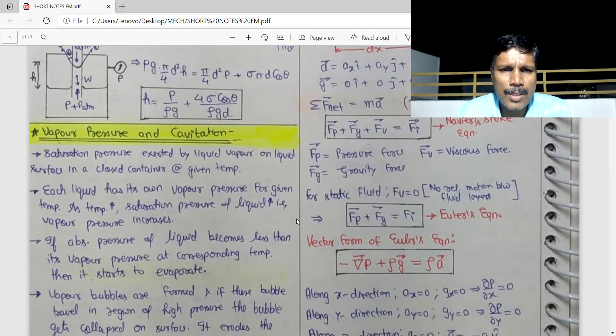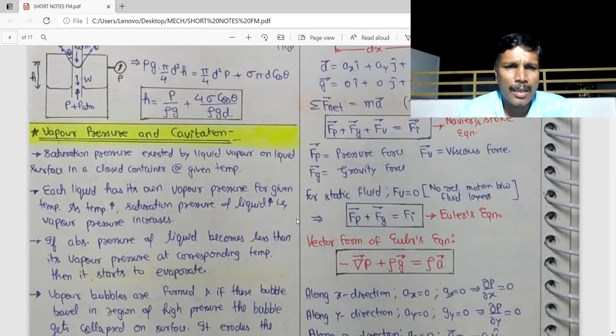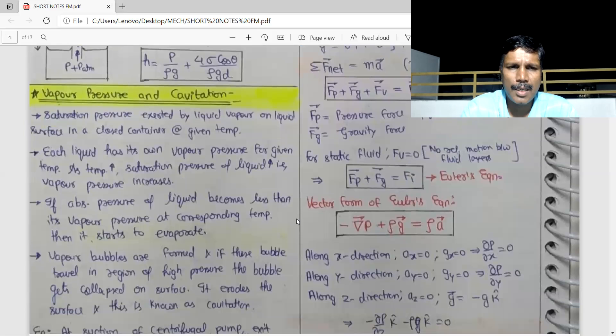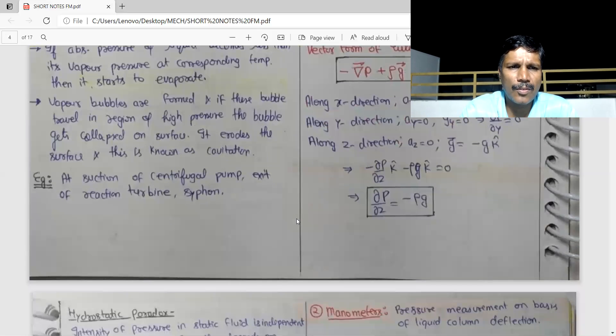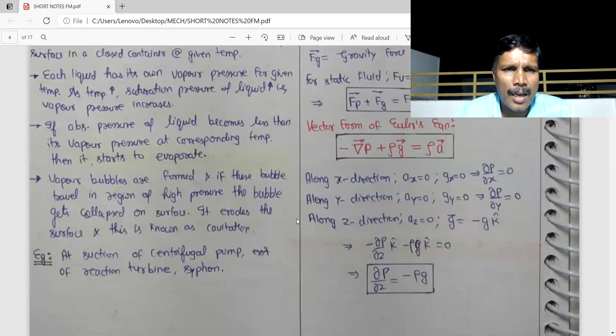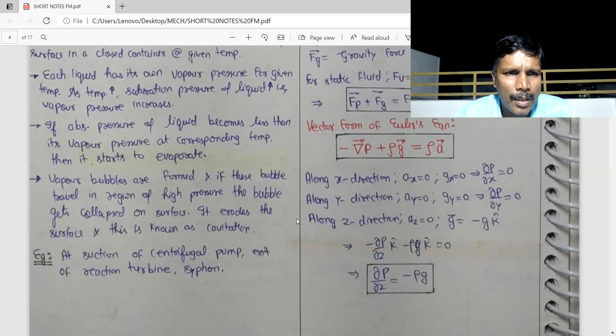When the pressure of liquid becomes less than vapor pressure at a given temperature, then vaporization takes place. So when you look at that pressure, if the vapor pressure is less than that, vapor pressure bubbles are formed. Vapor bubbles are formed. If that bubble travels in the region of high pressure, the bubble gets collapsed on the surface. So cavitation is formed.